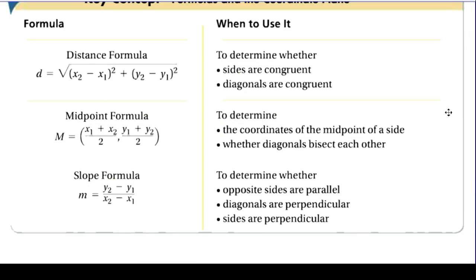You could be asked to use the distance formula, which is going to be helpful for figuring out that certain lines are congruent to each other — so sides are the same length, diagonals are the same length. Any concept where we're trying to figure out that two lines are the same size, you can use the distance formula. Anytime we need to find a midpoint, or if the word bisect shows up — when diagonals bisect each other, they're connecting at the midpoint — we would use the midpoint formula.